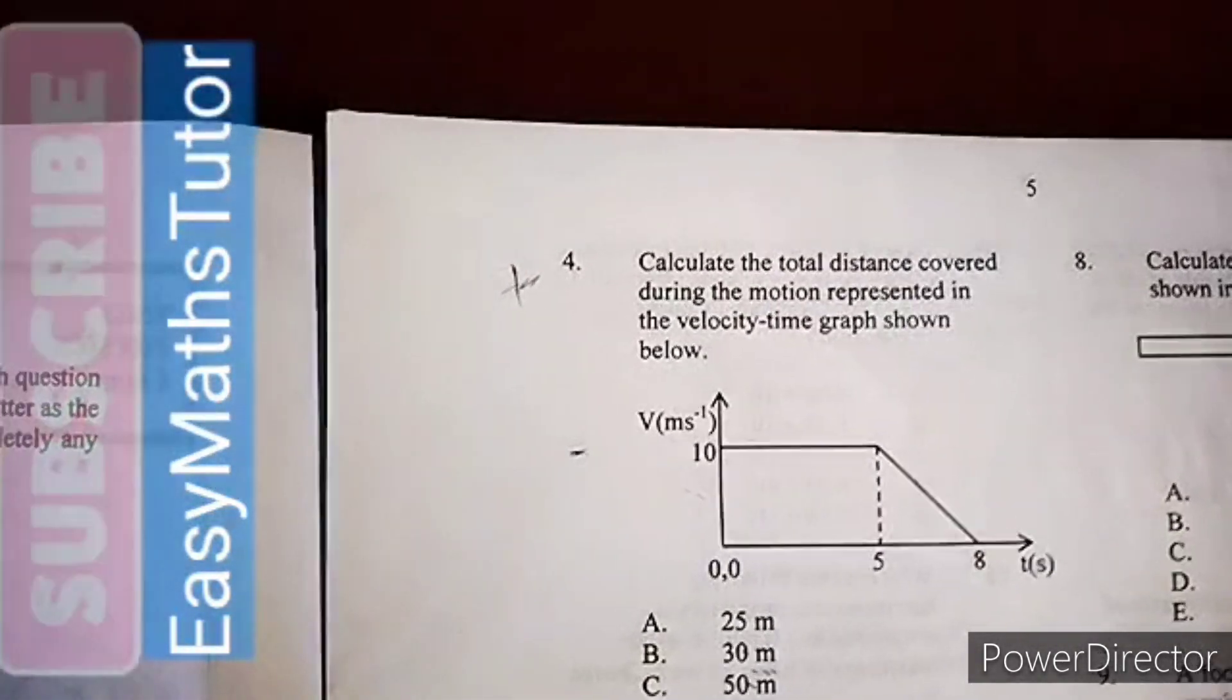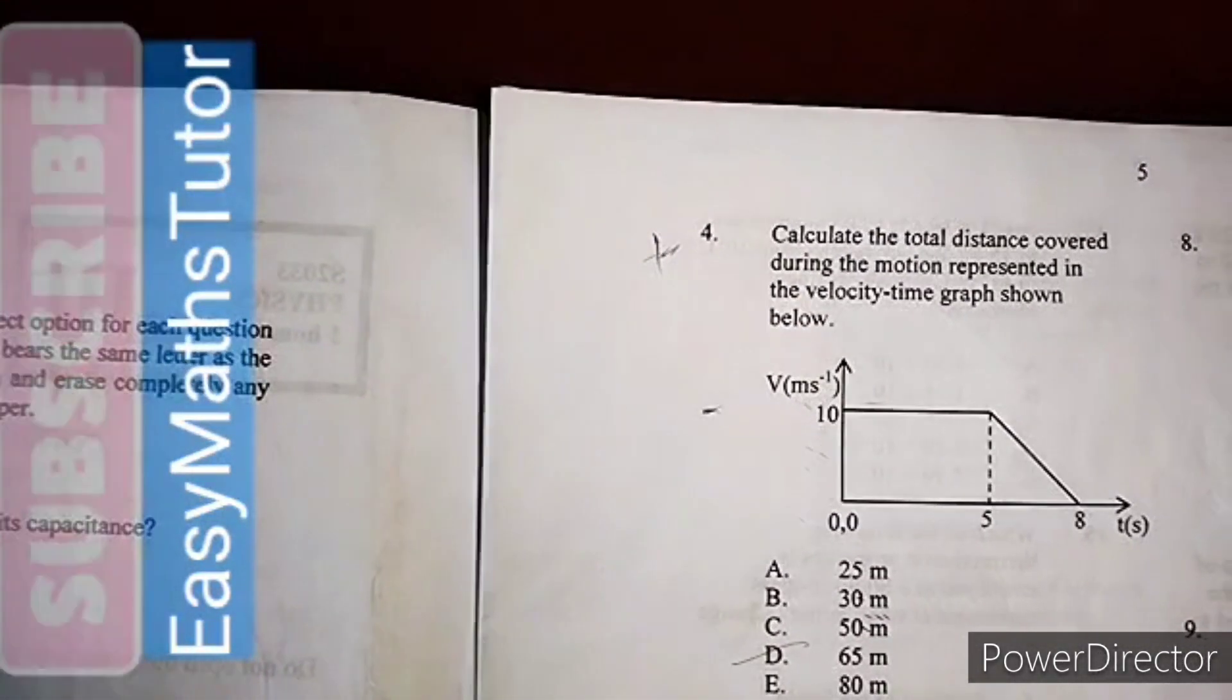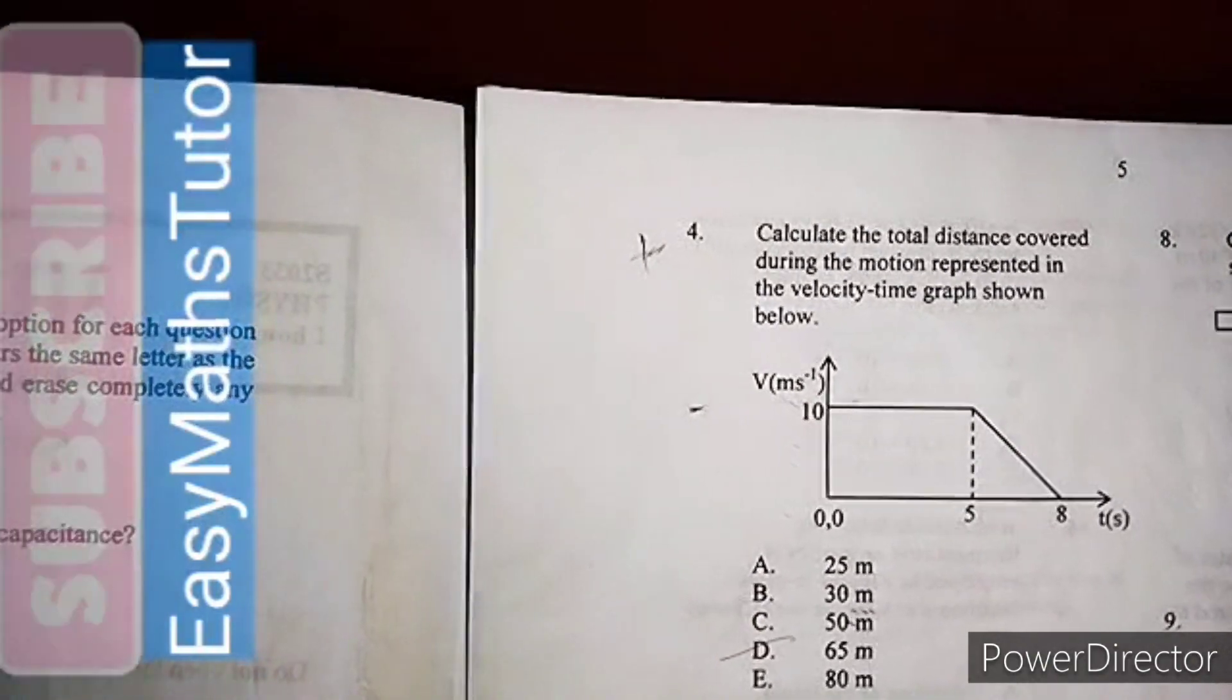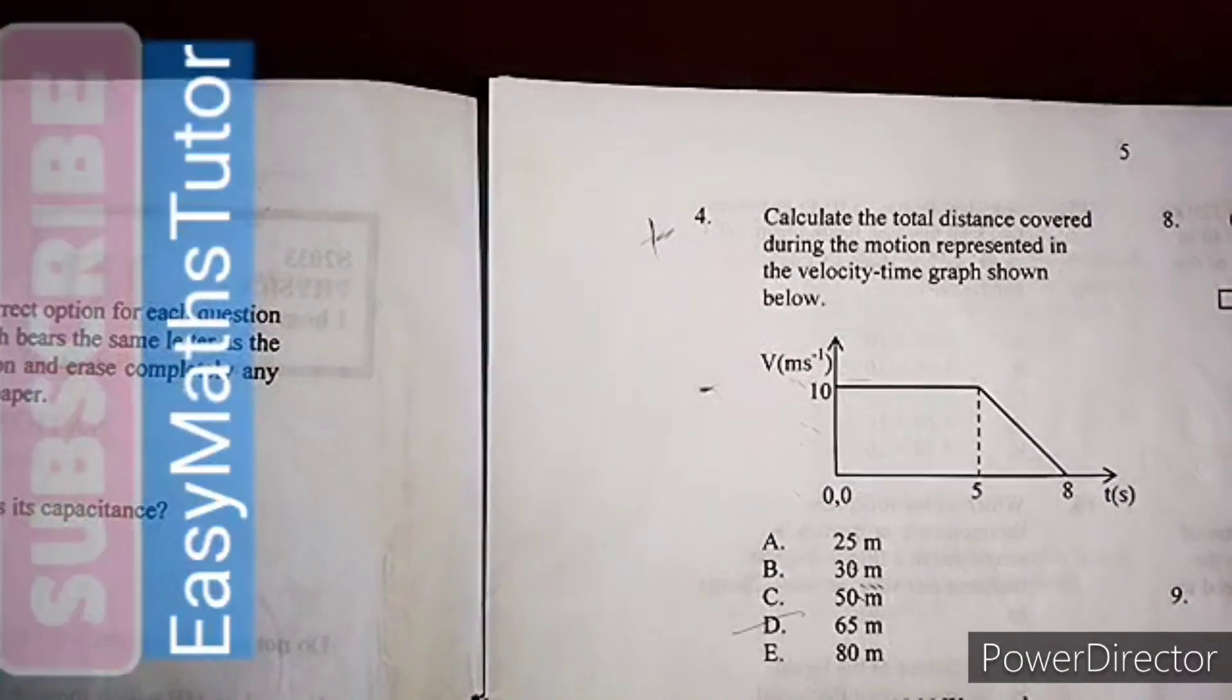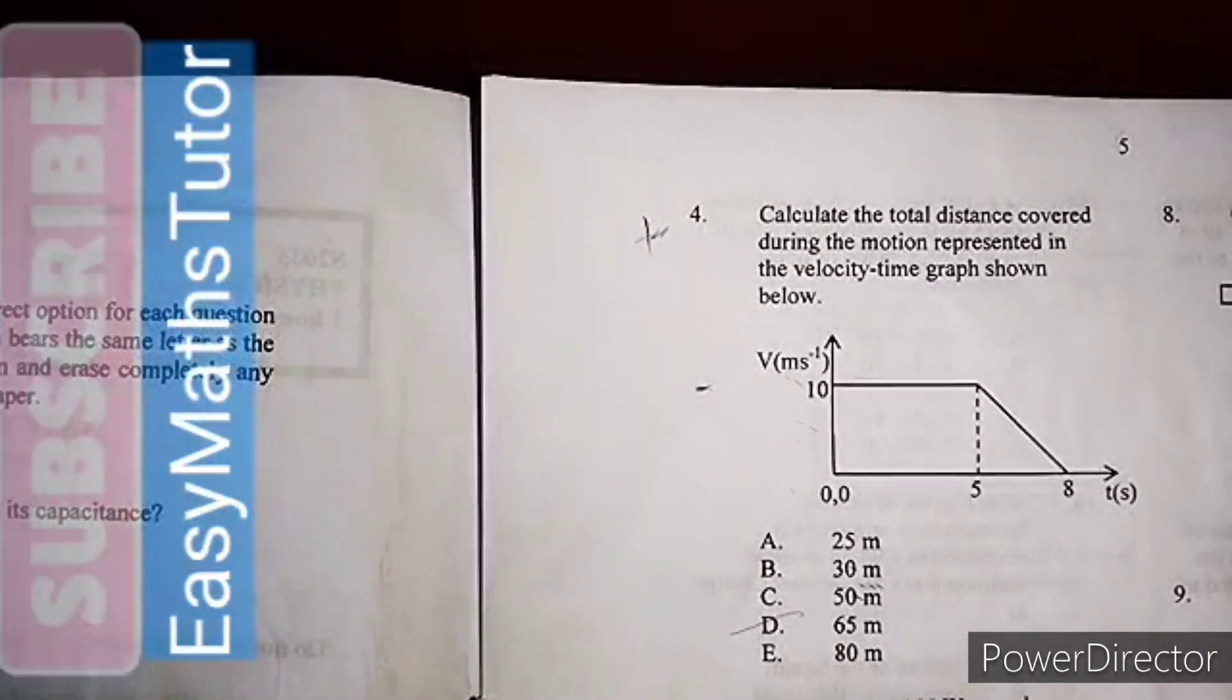Moving on to question four. The question says calculate the total distance covered during the motion represented in the velocity-time graph shown below.